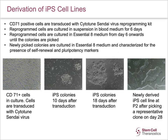This slide describes the process of derivation of new iPSC cell lines from somatic cells. The first photo shows CD71-positive cells derived from PBMCs in culture. We used blood reprogramming medium along with specific growth factors to culture the cells in suspension, then transduced them with CytoTune Sendai virus for reprogramming. Once reprogramming is successful, iPSC colonies start developing and attach at the bottom of the plate. The second photo shows small colonies at day 10, the third shows colonies at day 18, and the last photo is of a newly derived iPSC cell line at passage 2 after picking a representative clone on day 28.